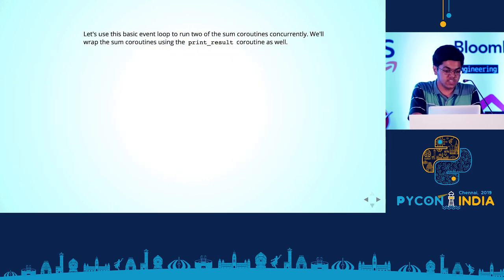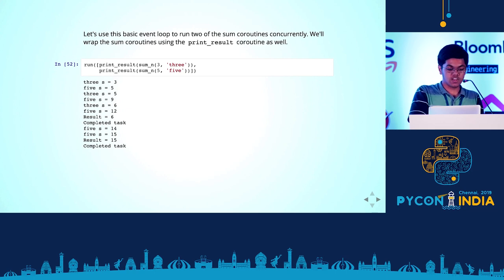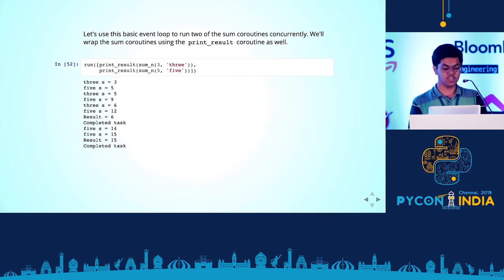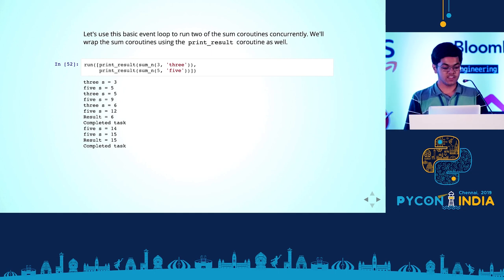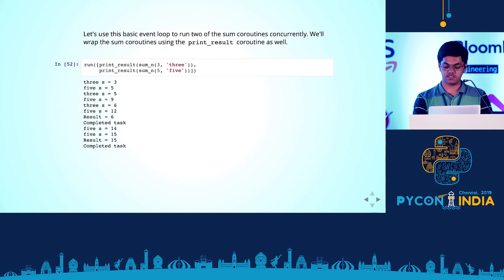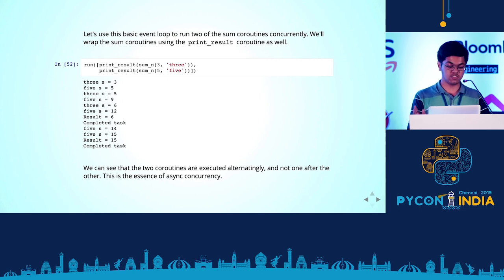We can see this in action. With two print_result coroutines — one summing to three and one summing to five — you can see the prints alternating: three, five, three, five, three, five. Once the three coroutine is done, it says 'result = 6' — that's the print statement from print_result, where yield from put six into result. Then the event loop says 'completed task', and then the five coroutine completes. The main point: these two functions were executed alternatingly — and that's basically what concurrency is.